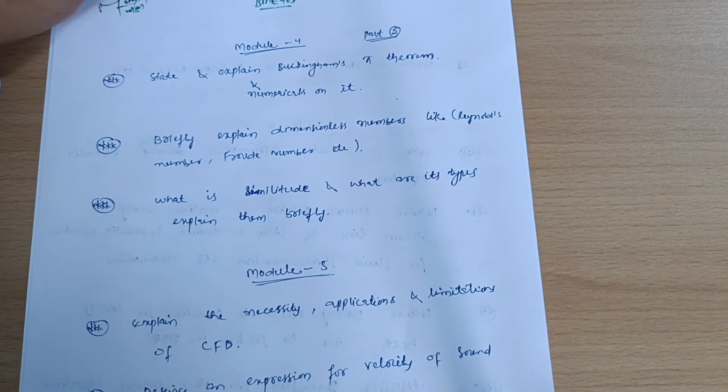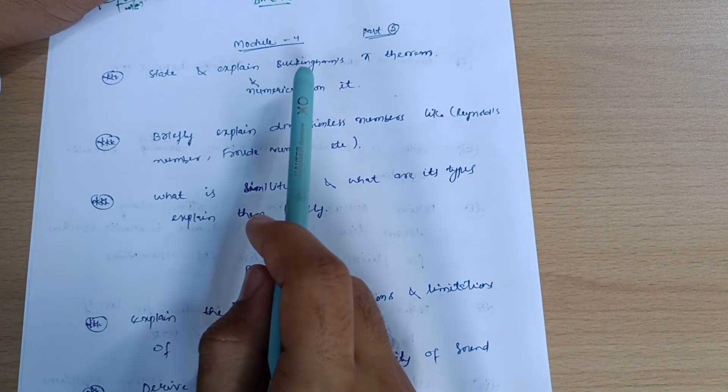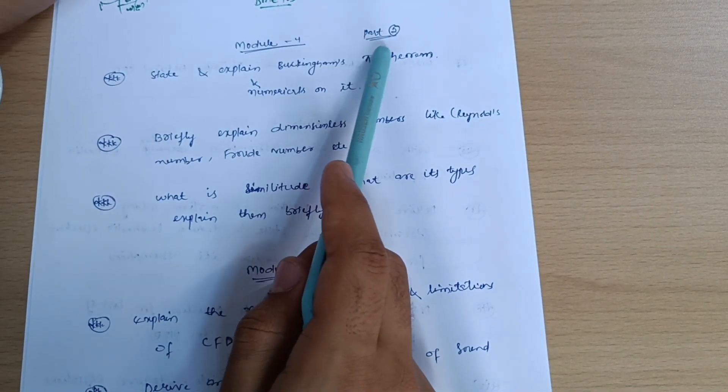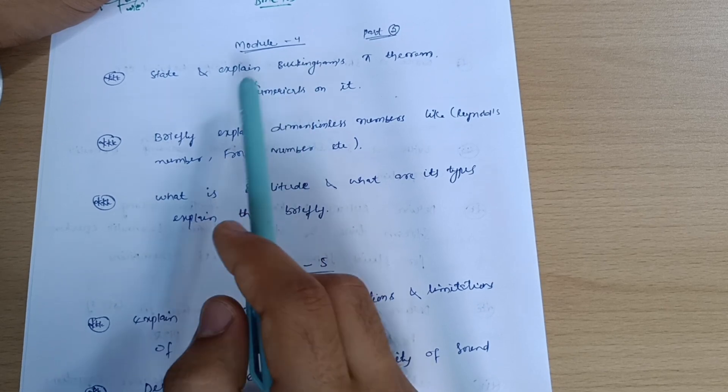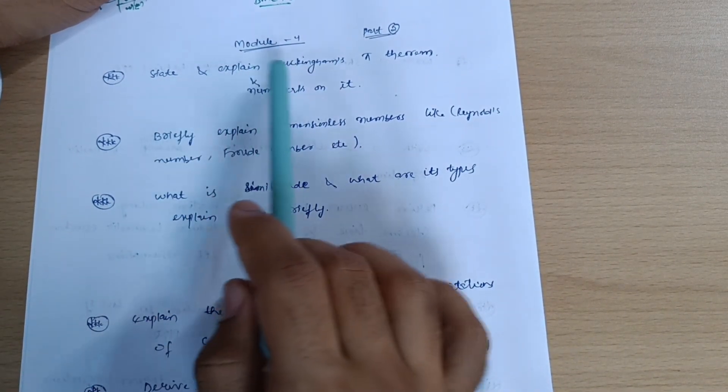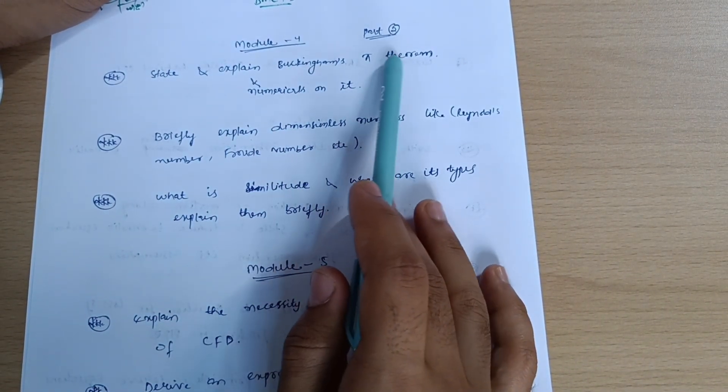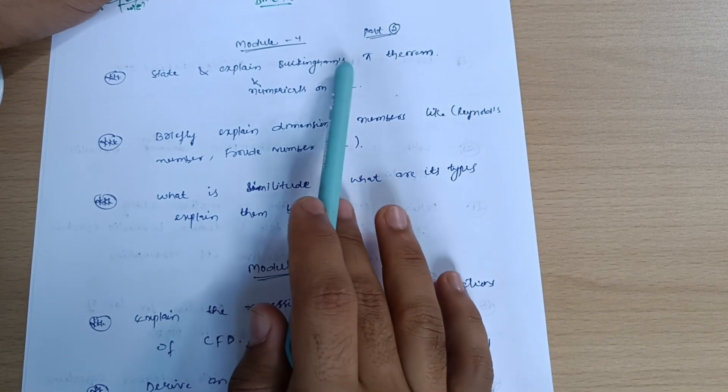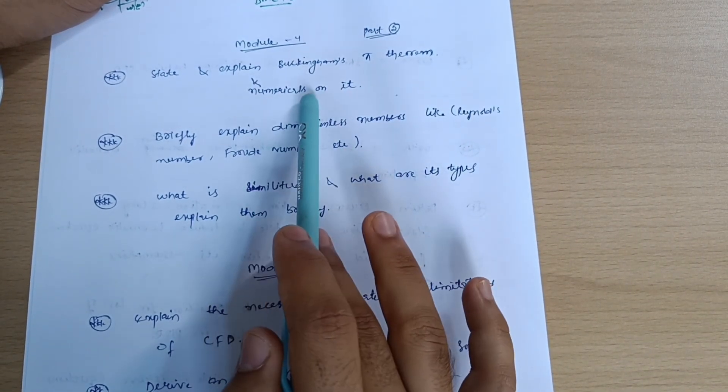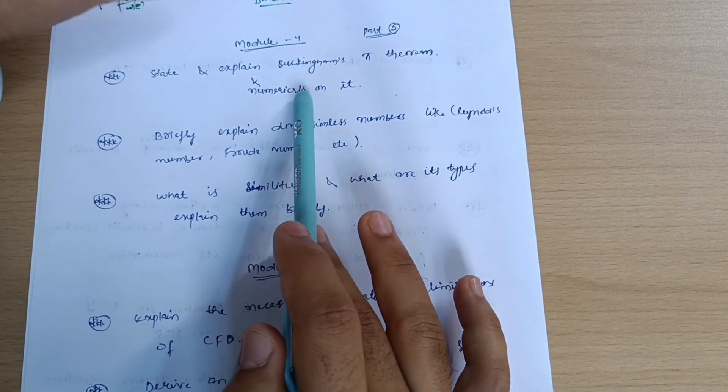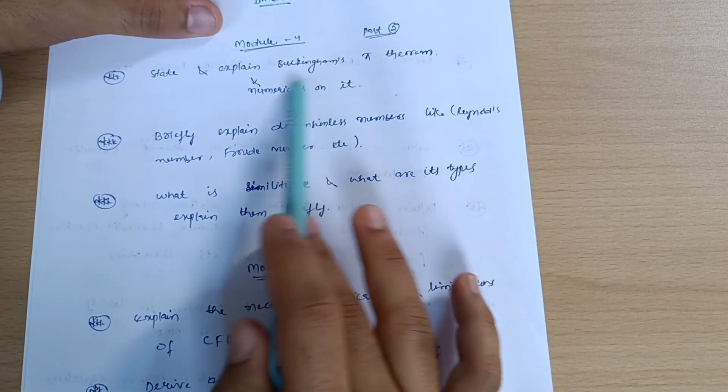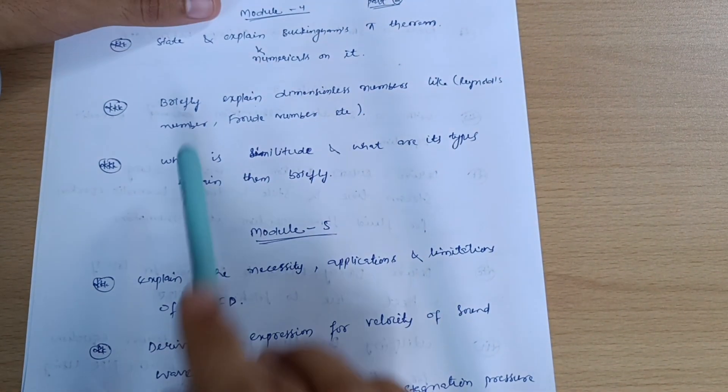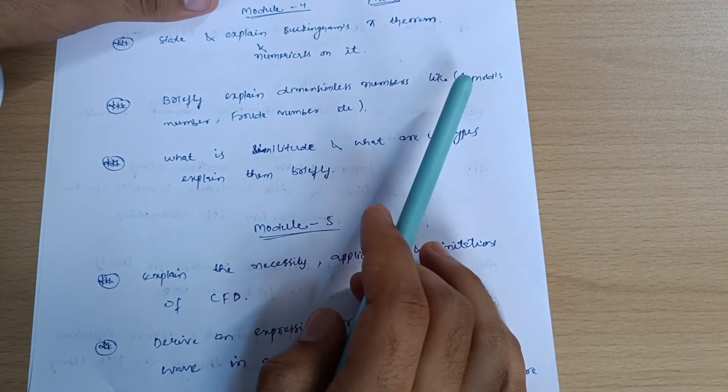Module 4 is somehow easier and the second part is much more convenient for you. You should go through this particular part on dimensionless numbers. State and expand Buckingham's Pi theorem - most important, it may be a ten marks question. You have to go for the numericals which are very simple ones. Briefly explain dimensionless numbers.